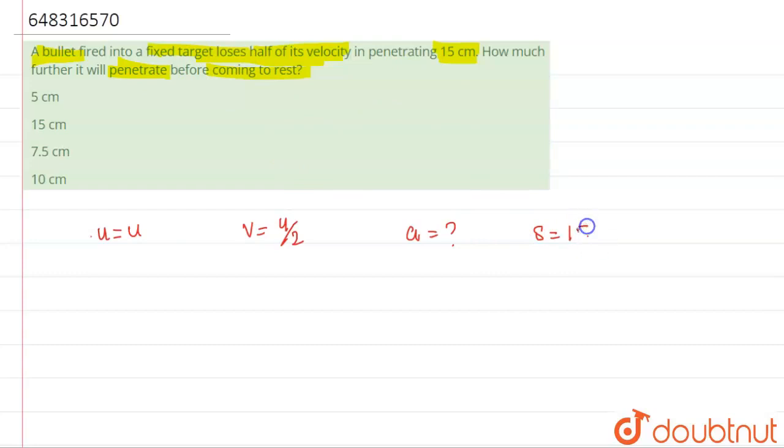We'll find it in centimeters per second only, because the answer is given in centimeters. We have to work according to the answer. Now we have to use the third equation of motion, which is v² = u² + 2as.